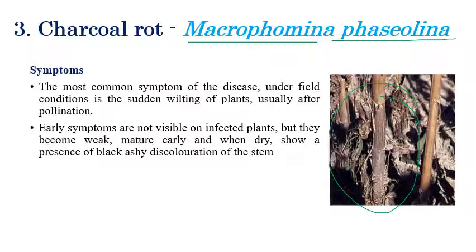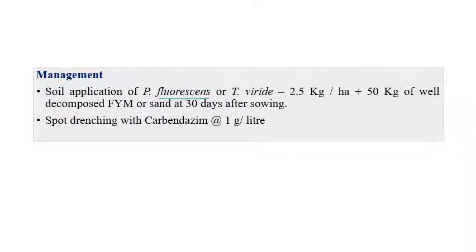Sudden wilting typically occurs during the flowering or pollination stage. If the stem is cut open, drying of vascular bundles and ashy discoloration of the stem can be seen. Sclerotia are also produced inside the vascular bundle. For management, soil application of Pseudomonas fluorescens or Trichoderma viride at 2.5 kg per hectare mixed with 50 kg of well-decomposed farmyard manure at 30 days after sowing is recommended, along with soil drenching of Carbendazim at 1 gram per liter.